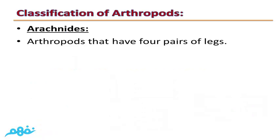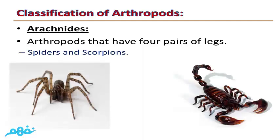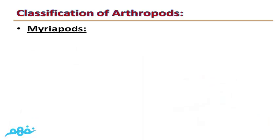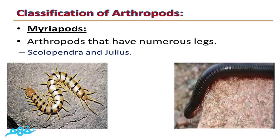Arachnids are arthropods that have four pairs of legs, such as spiders and scorpions. Myriapods are arthropods that have numerous legs, such as Scolopendra and Julius.